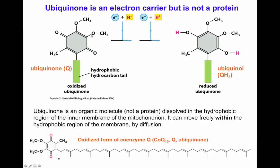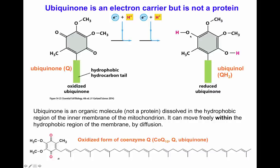In the head of the ubiquinone, you have two carbonyl groups where carbon has a double bond with oxygen. Sequential acceptance of one electron and one proton turns ubiquinone into ubiquinol, where each oxygen — instead of being part of a carbonyl group — is now part of a hydroxyl group. When ubiquinol — QH2 — donates its electrons, it can do so sequentially to go back to being ubiquinone with the carbon double-bonded to oxygen.